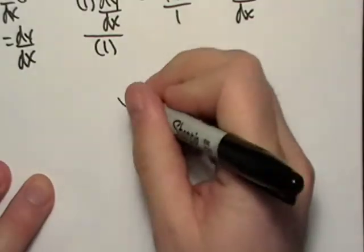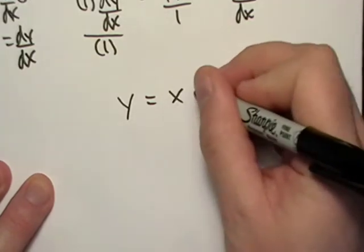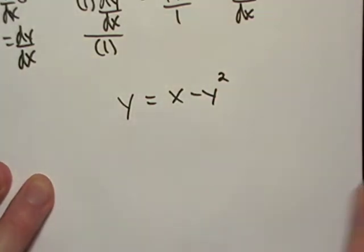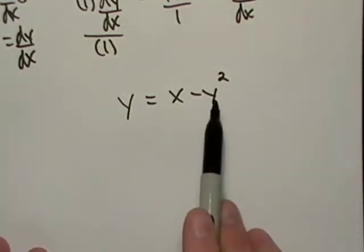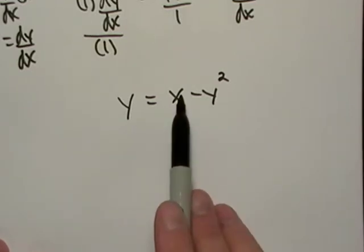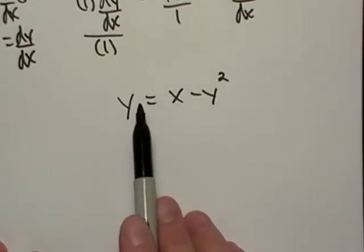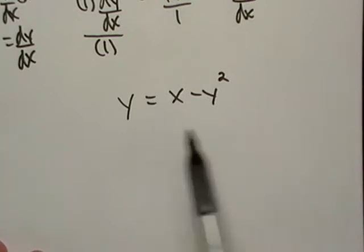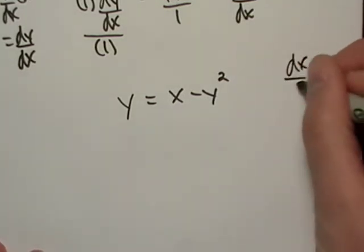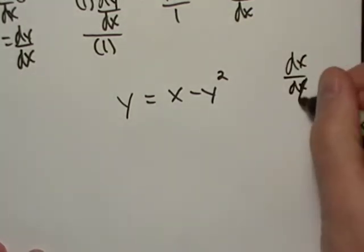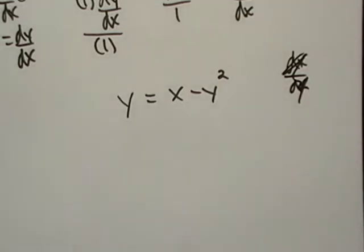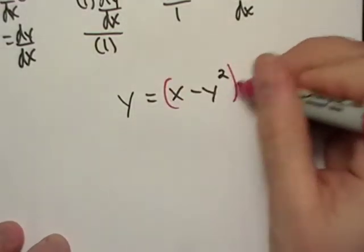So what if I have this function? One way you could move the y over here and you'd have x being equal to y plus y squared, and then you could take dx/dy. You could find it that way, but that's not what we're after. We want to actually find the derivative of y implicitly.